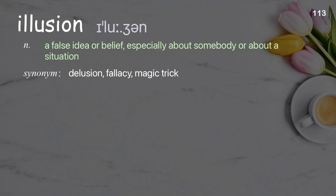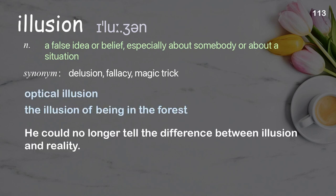Illusion: a false idea or belief, especially about somebody or about a situation. Examples: optical illusion; illusion of being in a forest. He could no longer tell the difference between illusion and reality.